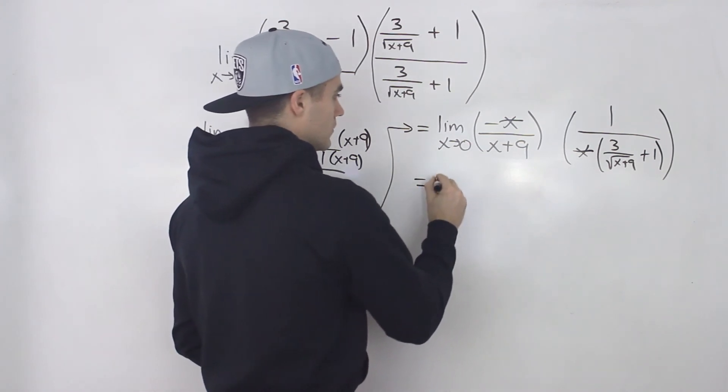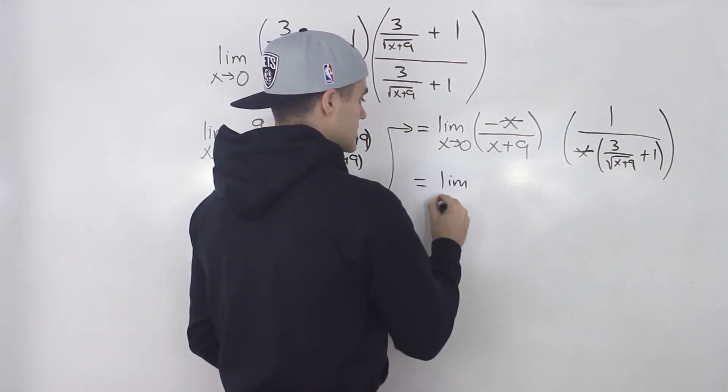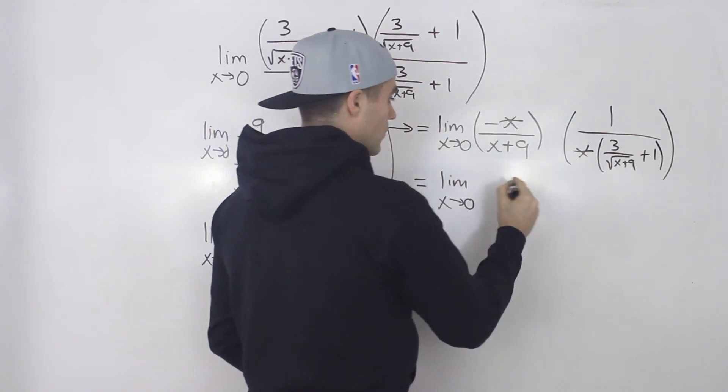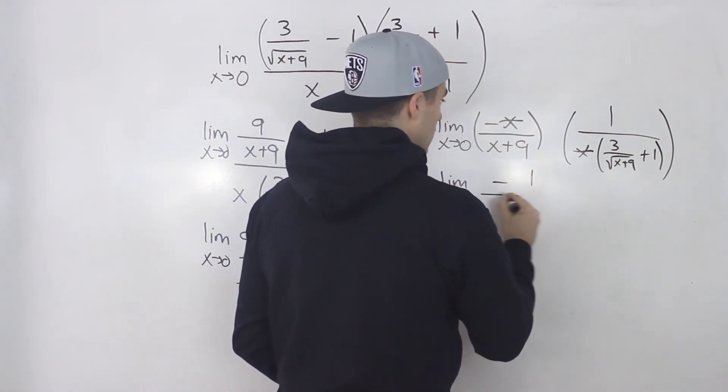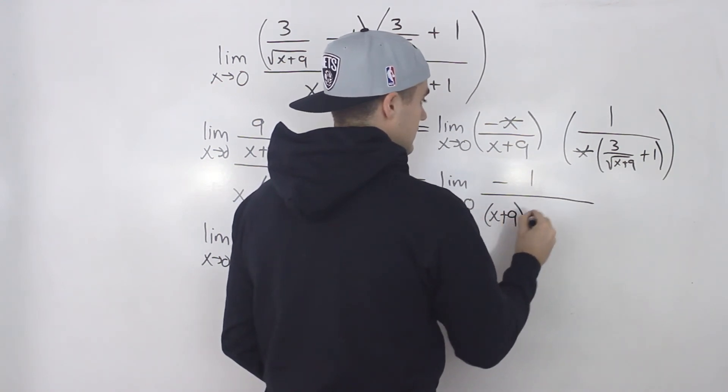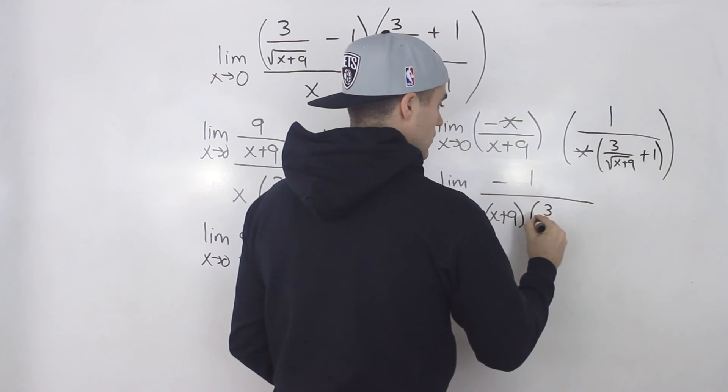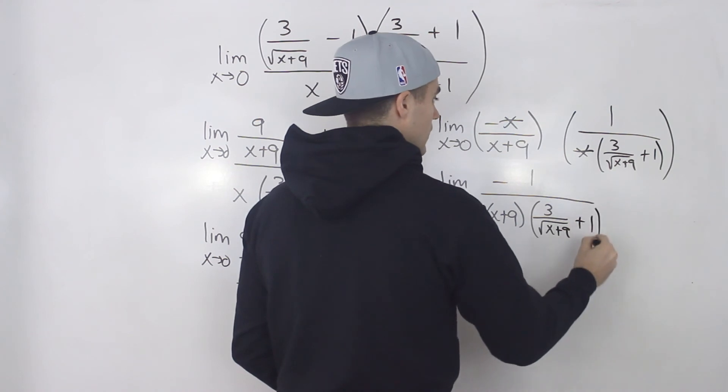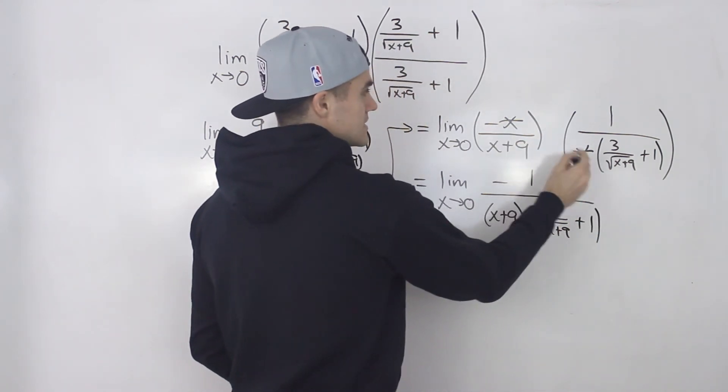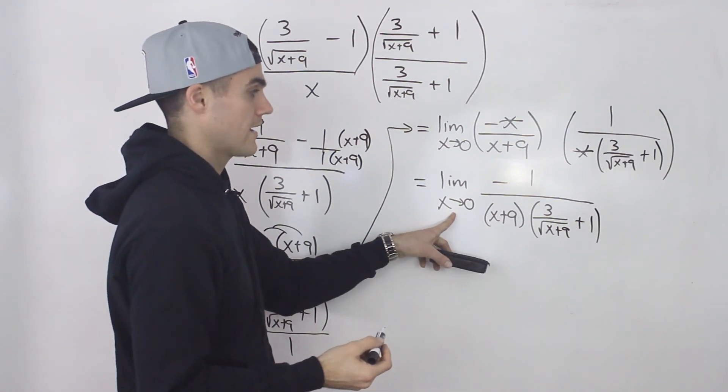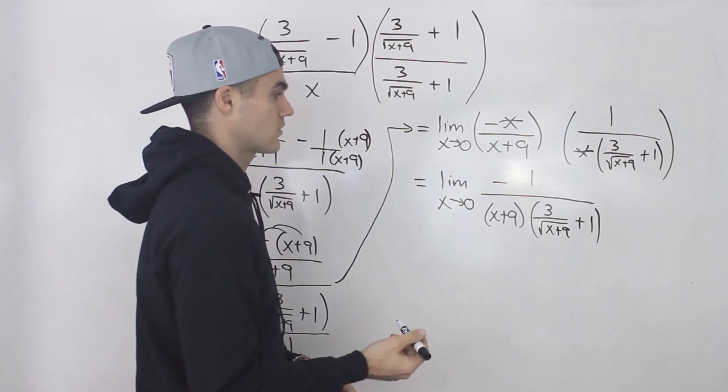And now notice how these x's will cancel out. So we'll be left with the limit as x approaches 0 of negative 1 all over this term x plus 9 times this term here, the square root, or rather 3 over the square root of x plus 9 plus 1. And notice that since these x's cancelled out now, we can plug in 0 for x and the denominator won't be 0 anymore.